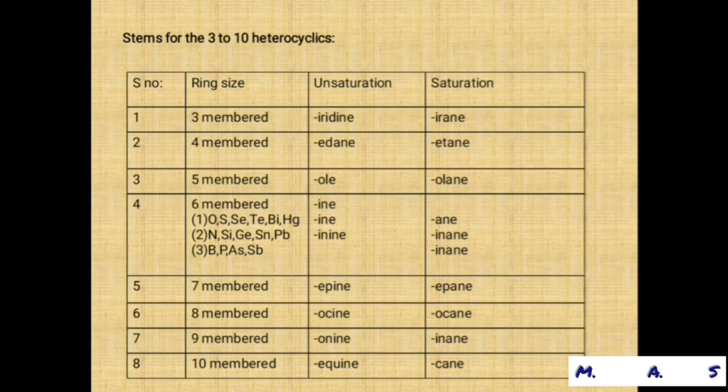The suffixes for ring sizes and saturation: 3-membered ring — unsaturated: irine; saturated: iridine. 4-membered ring — suffix: ete or etidine. 5-membered ring — suffix: ol (e.g., pyrrole, imidazole, pyrazole, thiazole); saturated: oline. 6-membered ring — suffix: in, inin, or ine. 7-membered ring — suffix: epine; saturated: epine. 8-membered ring — suffix: ocin or ocane. 9-membered ring — suffix: onin or inine. 10-membered ring — suffix: ecine or ecane.